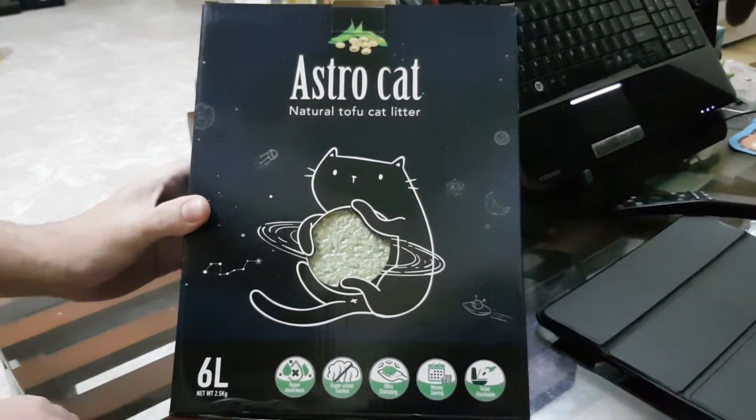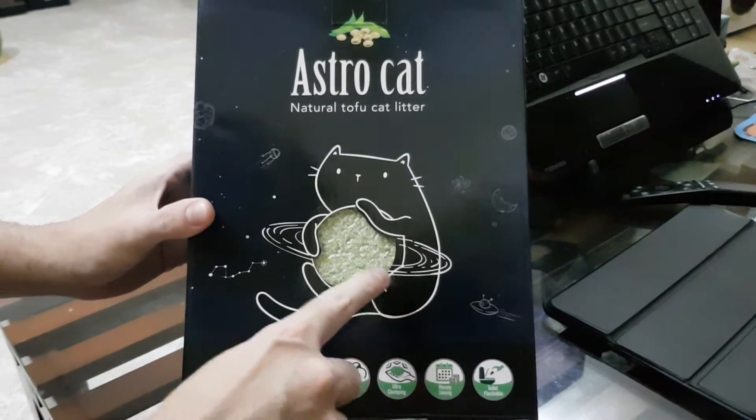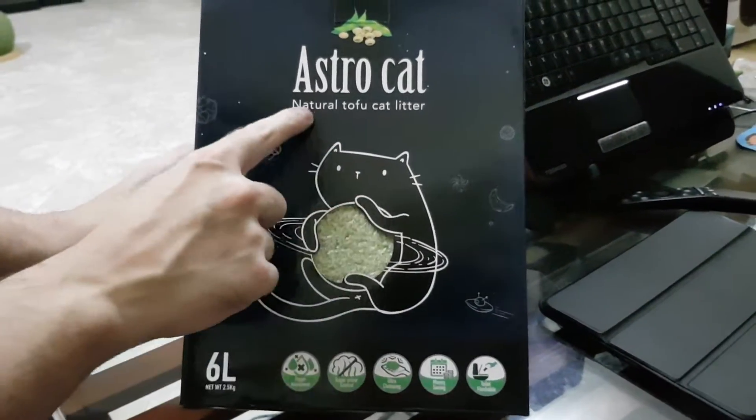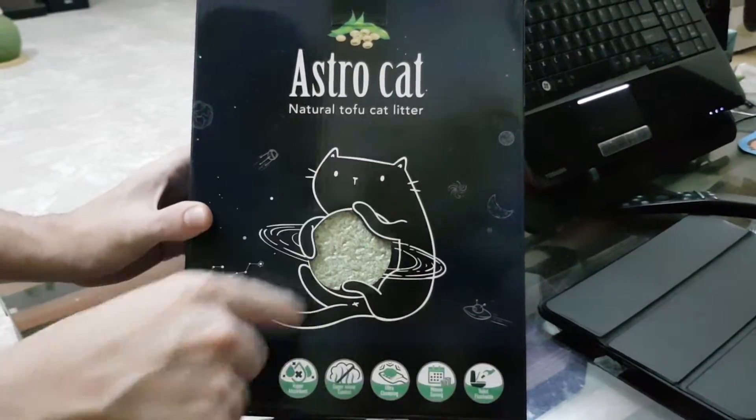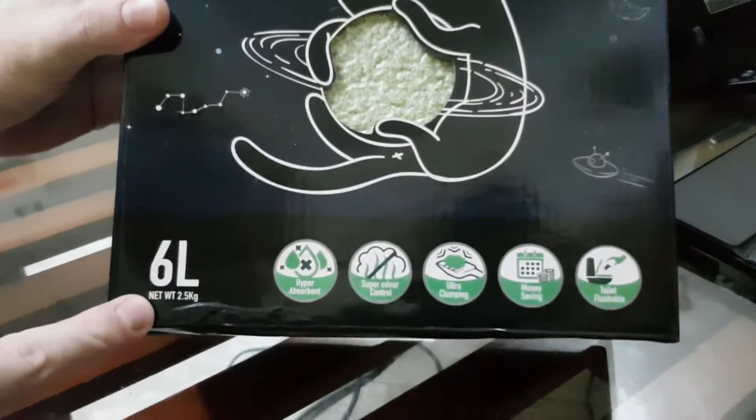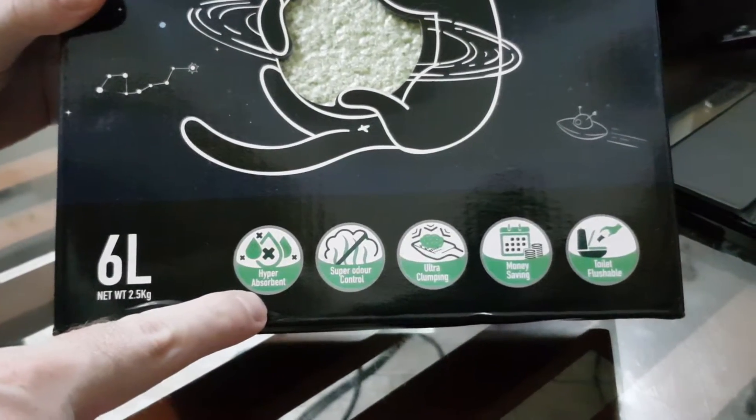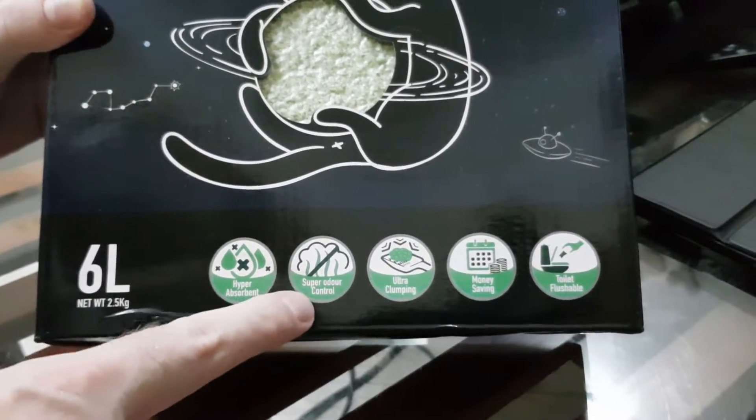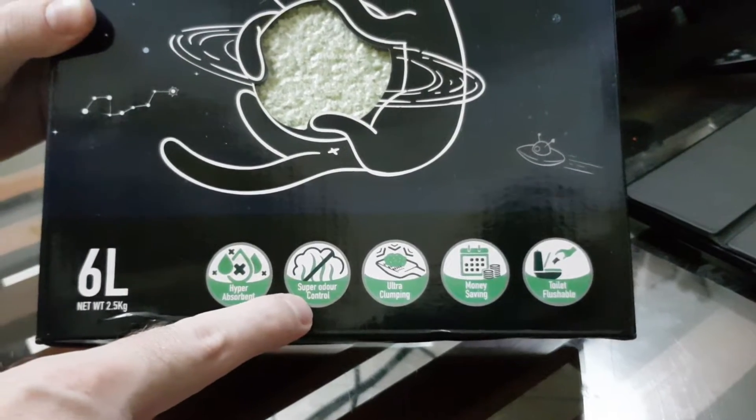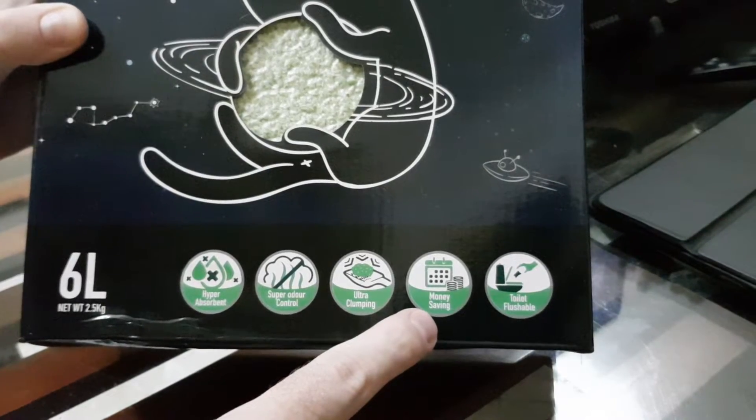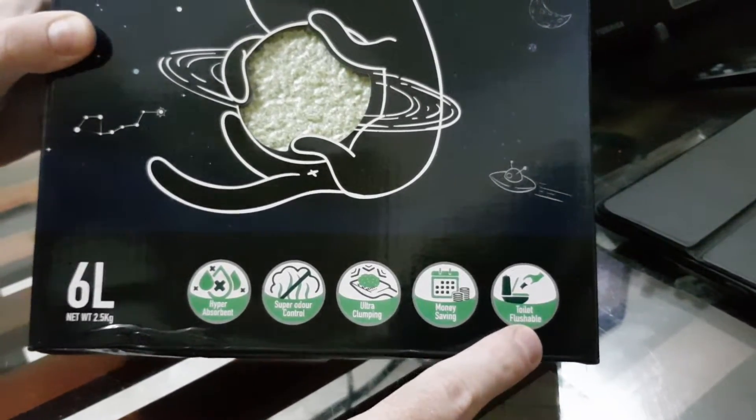Nostro Cat, the cat holding the Saturn, but here Natural Tofu Cat Litter, 6 liters, hyper absorbent, super odor control, no smell, ultra clumping, money saving, toilet flushable.